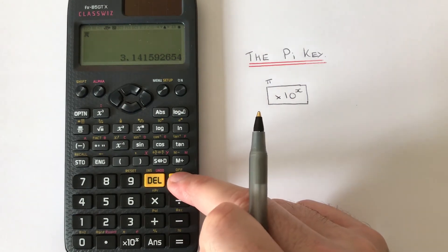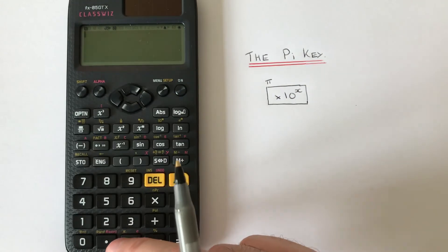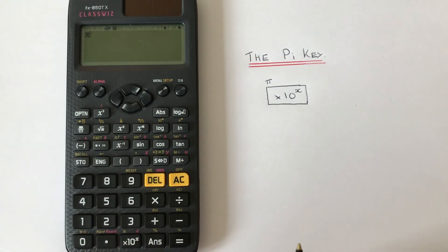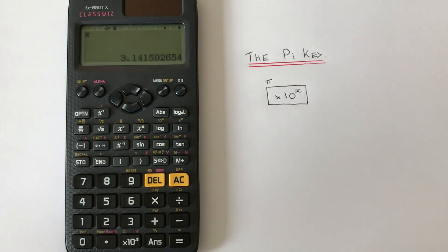Just press AC, then we go shift, times 10, so that gets PI up. Then if you want it as a decimal, press equals and then S⇔D. Thanks for watching guys, see you next time.